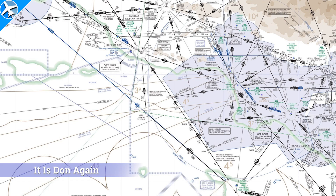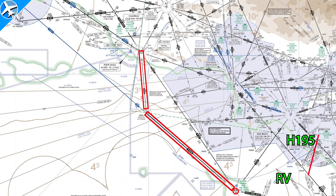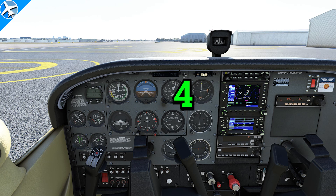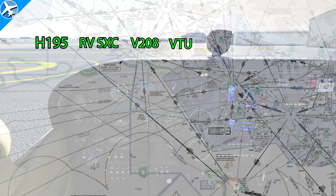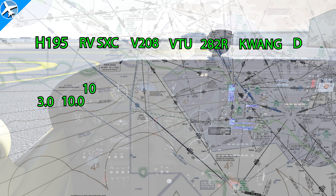November 784 Tango Charlie cleared to the Santa Barbara airport via on departure flight heading 195. Expect vectors to Santa Catalina, then Victor 208 Ventura. The Ventura 282 radial to Quang, then direct. Climb and maintain 3000. Expect 10,000, 10 minutes after departure. Departure frequency 128.1. Squawk 2636.